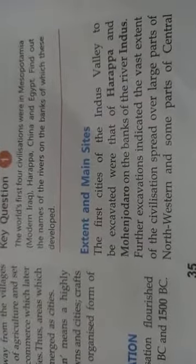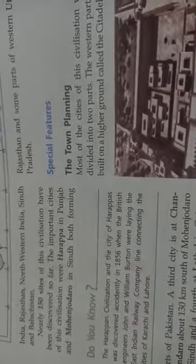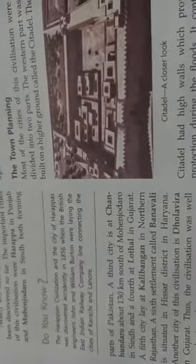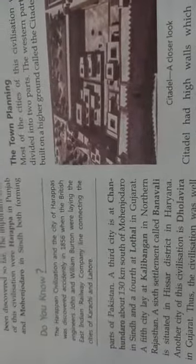Extent and main sites. Harappa and Mohenjo-daro — Mohenjo-daro on the bank of the Indus river — covered a large part of north-western and some part of central India, Rajasthan, north-west India, Sindh and Balochistan. Harappa is an important city in the civilization located in Punjab, and Mohenjo-daro in Sindh; both are in present-day Pakistan. A third city is called Chanhudaro, about 130 km south of Mohenjo-daro in Sindh.